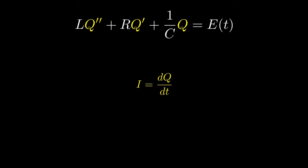This gives us L times the second derivative of Q plus R times the first derivative of Q plus 1 over C times Q is equal to E of T. We can also express everything in terms of I as an alternate form of the equation, and this would give us L times the derivative of I plus R times I plus 1 over C times Q is equal to E of T.